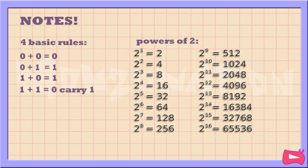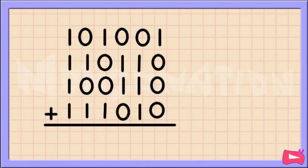So, let's start with the four basic rules. Also, you will need powers of 2 to convert each binary number into a decimal number. Now, let's work on some example problem.